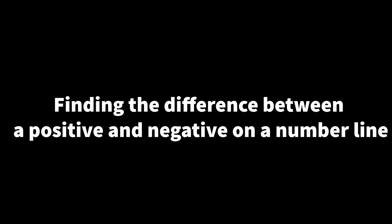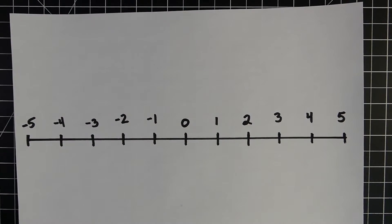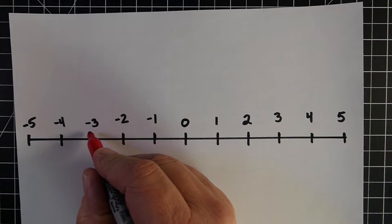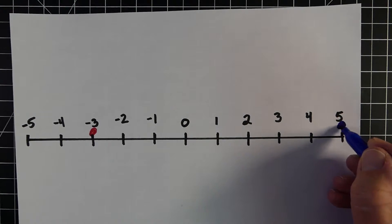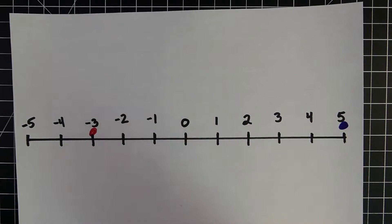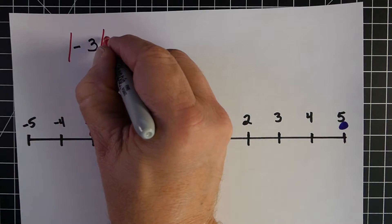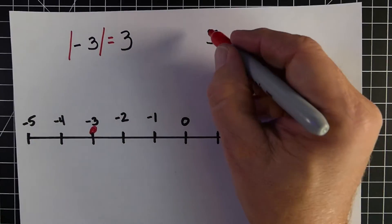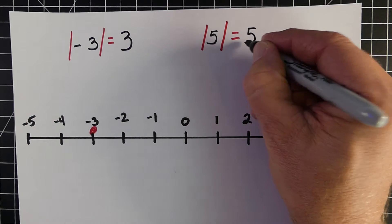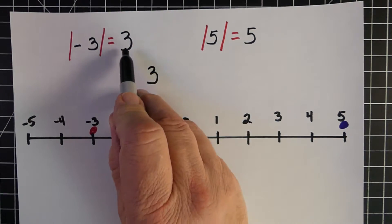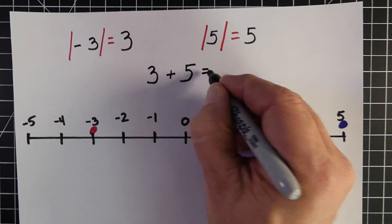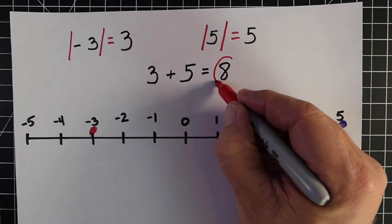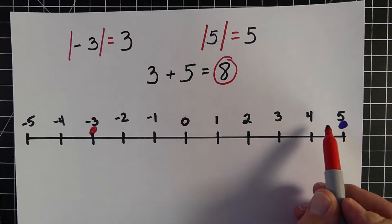Next are a few examples of actually using absolute value to help solve math problems. The first is finding the difference between two numbers — a positive and a negative — on a number line. We're going to put one point on negative three and our other point on positive five. Our first step is to find the absolute value of negative three, which is three. Next, we find the absolute value of positive five, which is five. Then we add these two absolute values together and get eight. So the distance between negative three and positive five is eight.